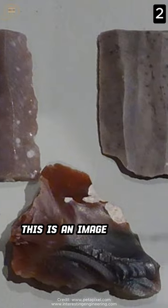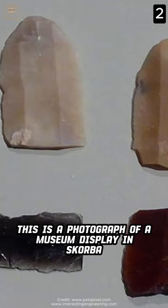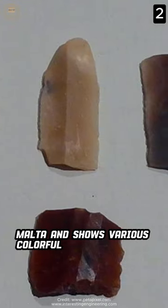This is an image of one of the very first human tools. This is a photograph of a museum display in Scorba, Malta, and shows various colorful rocks that were presumably for food preparation.